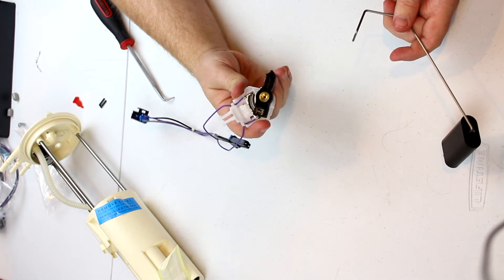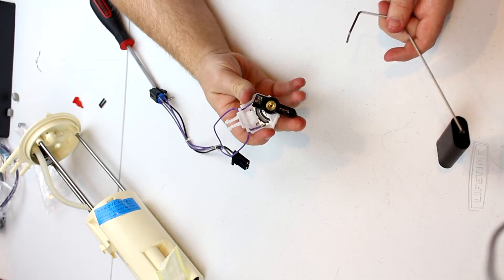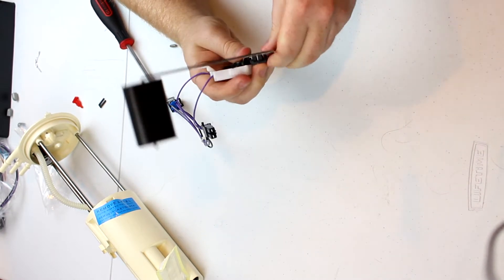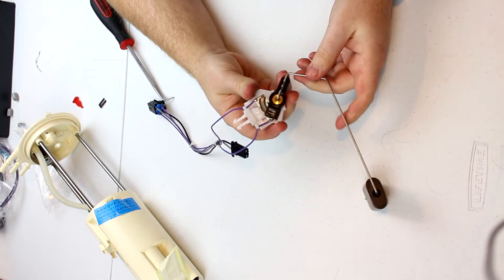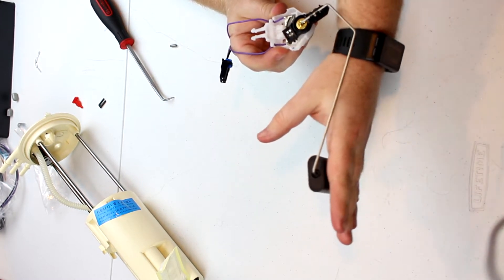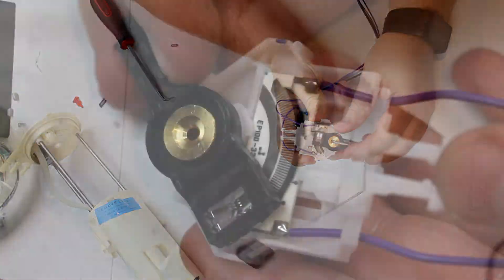So this is your fuel level gauge. This can rotate. And this float sits in here. It's snapped into place. As the fuel level rises, it just pushes up. And this is a variable resistor.